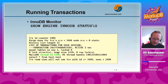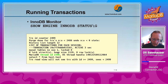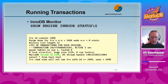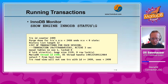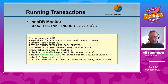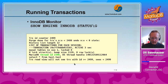Then in a third section in the InnoDB monitor with SHOW ENGINE INNODB STATUS you have the running transactions. You can see which transaction is running right now inside InnoDB. And here again you have the connection ID — called thread ID — so you can see which connection is running which transaction.